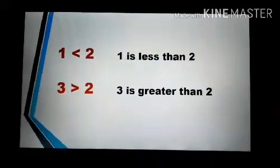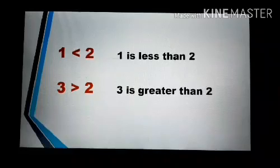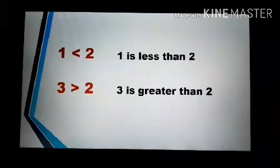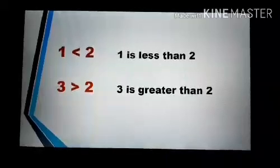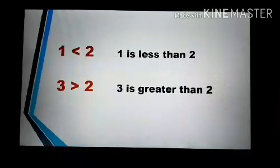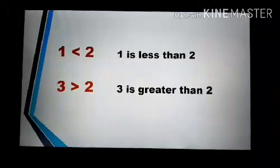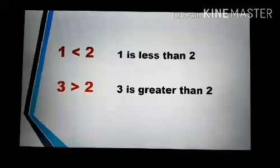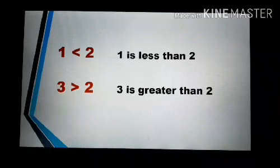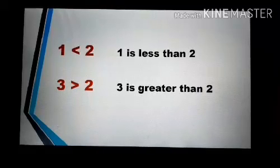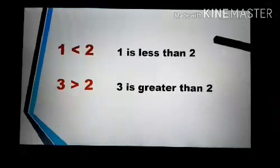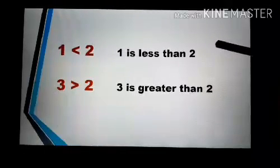We can think of the symbols as a big mouth. The big mouth eats the big number. Here we have 1 and 2. Look at the sign — its big open side is open towards 2, which is the bigger number. So we can say 1 is less than 2.